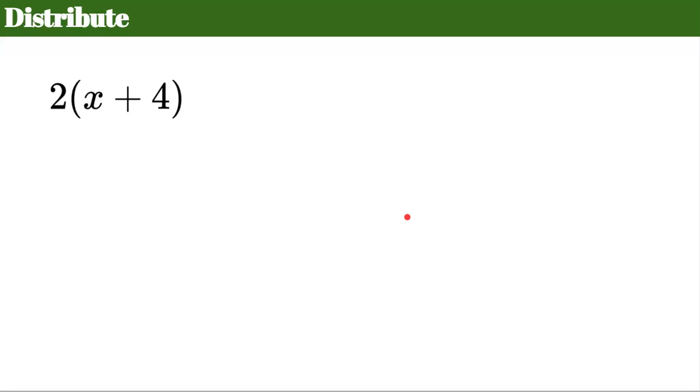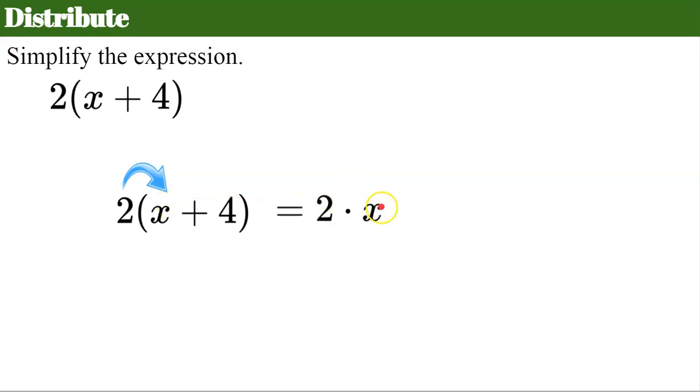Let's try it on this example. We're going to distribute. So we have 2 multiplied by the quantity x plus 4. So the first thing we're going to do to simplify this expression is we're going to identify that we have to multiply the 2 and x which gives us 2 times x. Then we need to multiply the 2 by the 4.